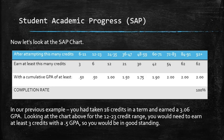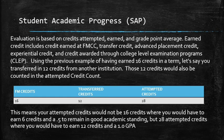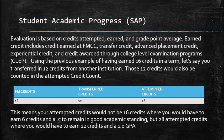Evaluation is based on credits attempted, earned, and grade point average. Earned credit includes credit earned at FMCC, transfer credit, AP credit, experiential credit, and credit awarded through college level examination programs (CLEP). For example, if you earned 16 FM credits and transferred in 12 credits from another institution, your actual attempted credits would be 28. This means instead of needing 6 credits and a 0.5 GPA, you'd need 12 credits and a 1.0 GPA to remain in good academic standing — so it's something to pay close attention to.